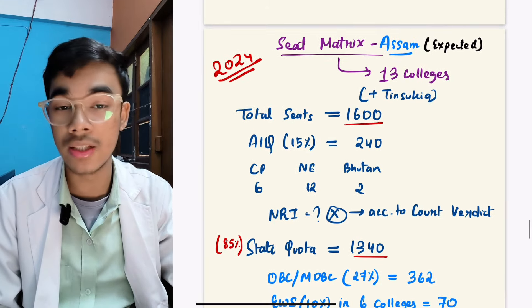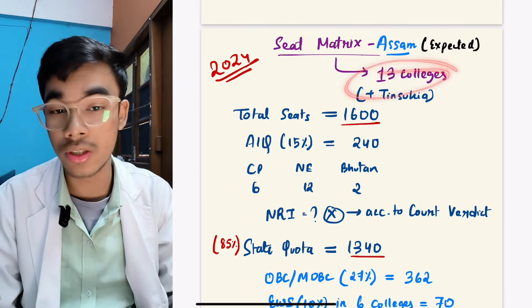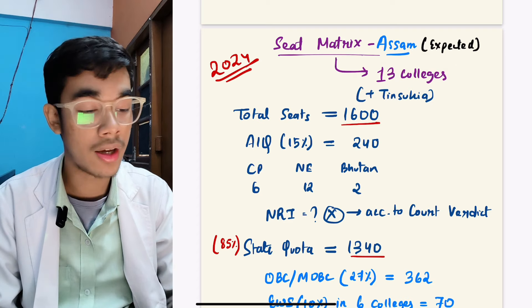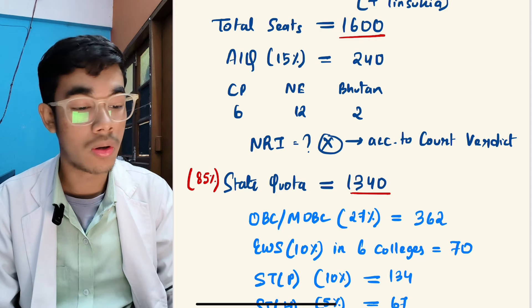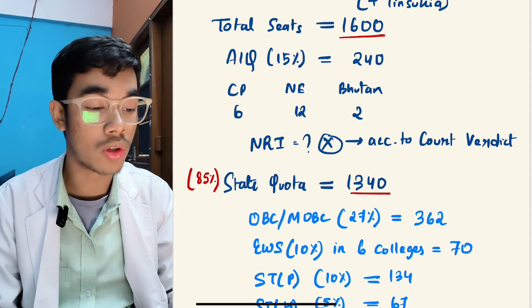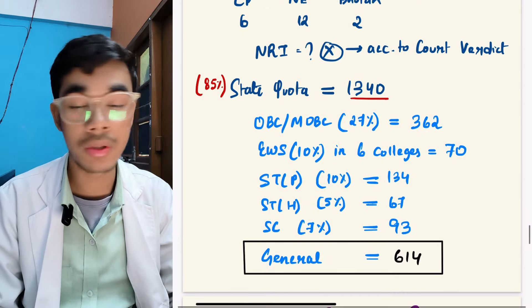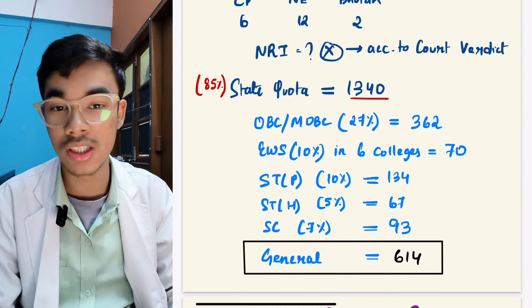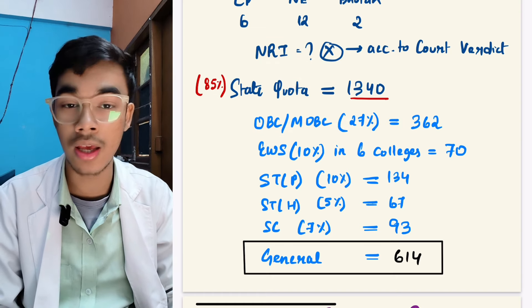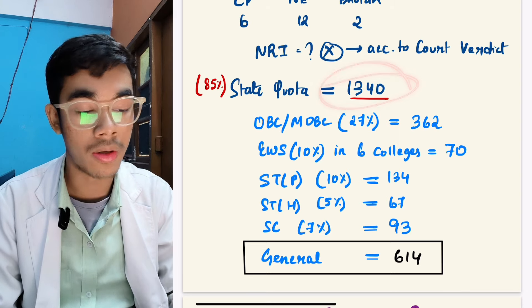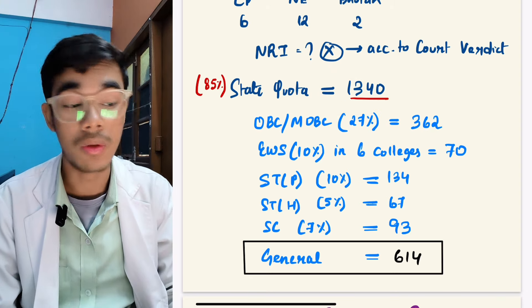Now the seat matrix which we have seen in 2024, which is tentative, I will tell you. If there are 13 medical colleges like 300 medical colleges added, then the total number of seats will be 1600 definitely. In NRI there are 240 seats, central pool 612 to NRI quota. For now I will have zero seats. State quota has 85% seats, then it will be 1340, around 1340 seats. And in OBC, 27% seats will be there.